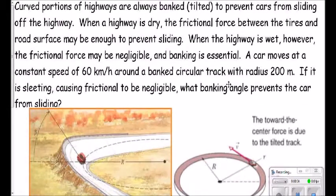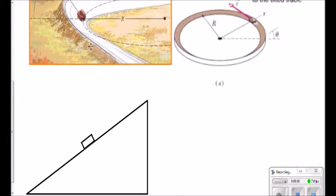Okay, we are going to do the problem that we've done in class, trying to find the angle of inclination or the banking angle between the ground and the road itself to prevent a car from sliding off of a track or the road when it's traveling at 60 kilometers per hour if there's no friction.